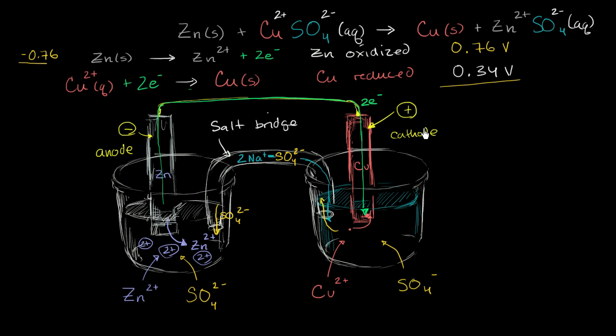if we have the standard concentration, which would be one molar, which is one mole per liter of the ions in their aqueous solution, if we're at standard temperature, standard pressure, then we would have essentially constructed a 1.1 volt battery. And I've just added these two things together.